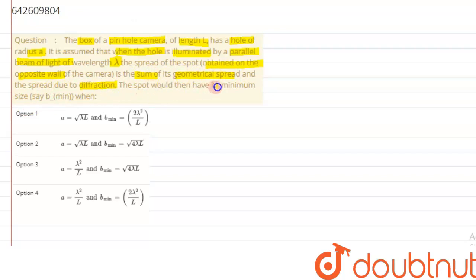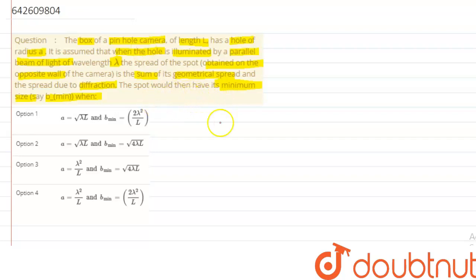The spot would then have its minimum size, say b minimum. We are interested in finding the radius of the hole and the value of b minimum, that is the spot size. Let's try to understand the given situation with the help of a diagram.